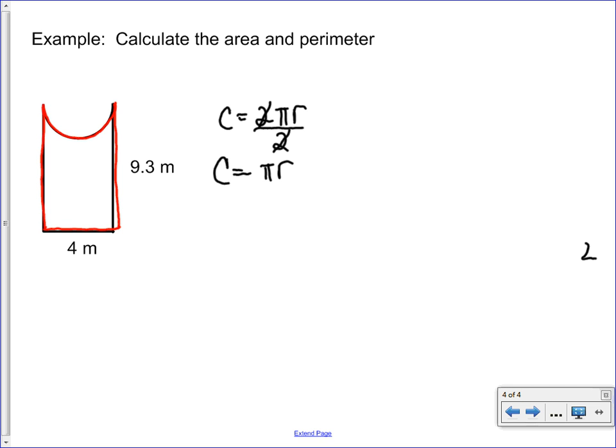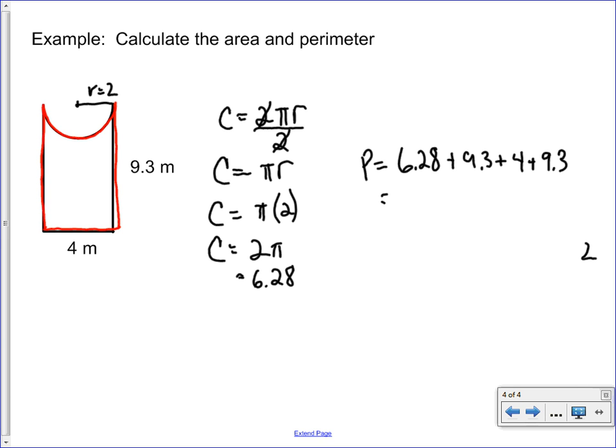We know from the last example that our radius is 2, so the circumference is pi times 2. So we have the circumference of the semicircle is 2 pi, which is 6.28. So the perimeter is the circumference of half of the circle plus 9.3 plus 4 plus 9.3.